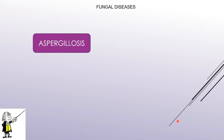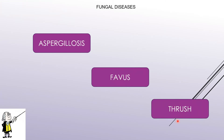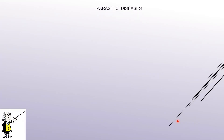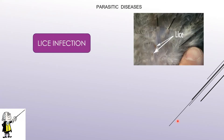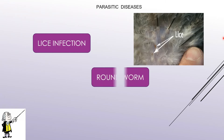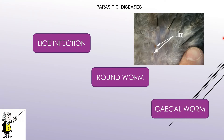The next group is fungal diseases, which include aspergillosis, favus, and thrush. Parasitic diseases include lice infection — in which birds are infected with lice that suck blood — roundworm (Ascaridia galli), and sickle worm, a worm present in the intestine. These are the three important parasitic diseases.